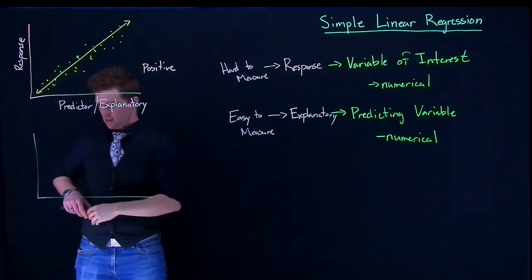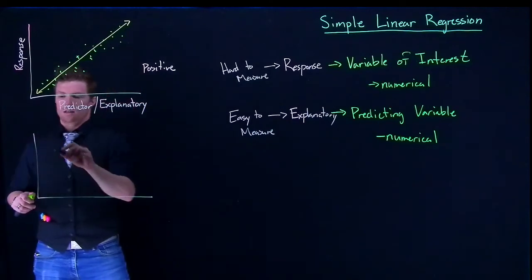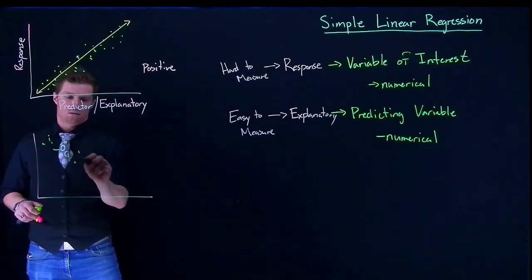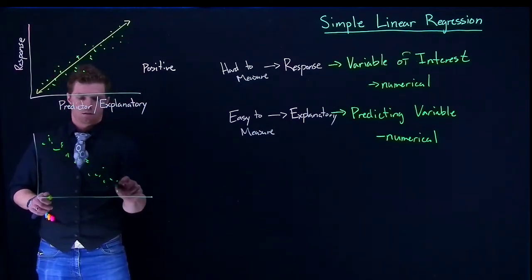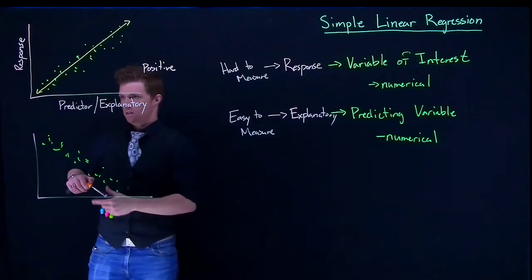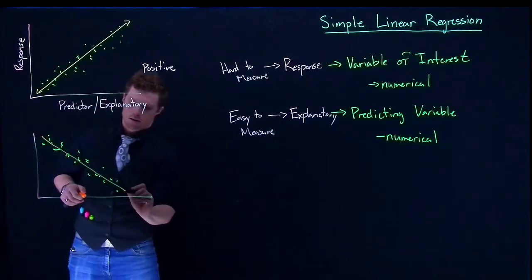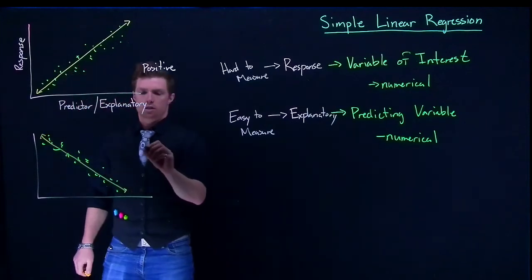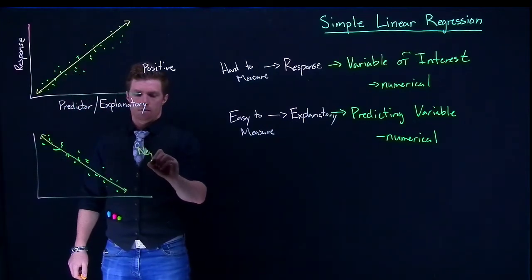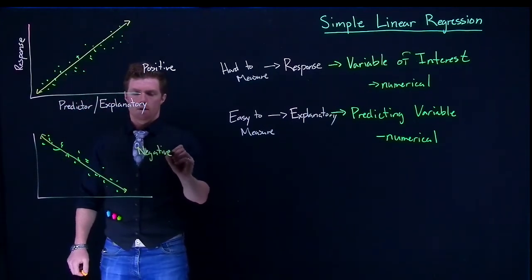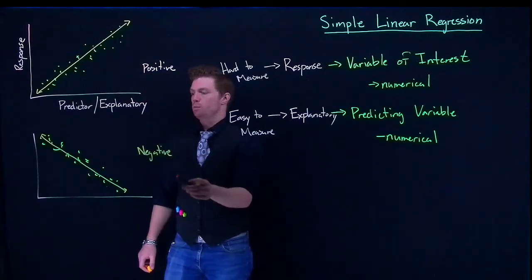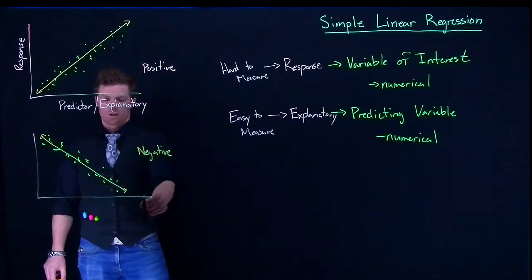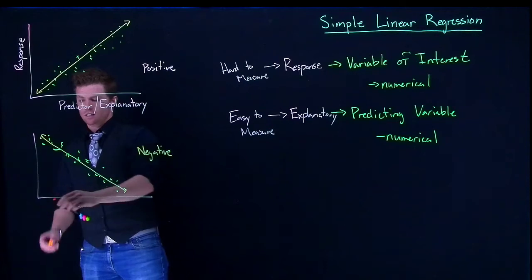For this one, if we had something that looked like this, this is a negative relationship. This doesn't mean that it's a bad relationship. It just means that as the predictor increases, the response decreases.